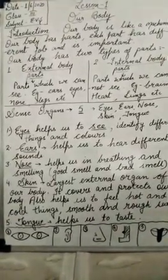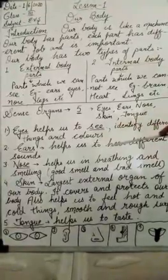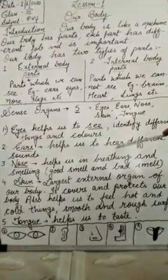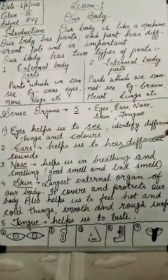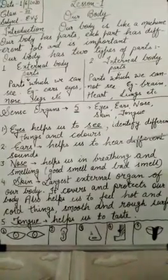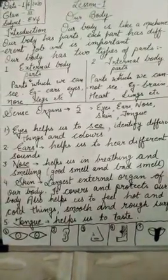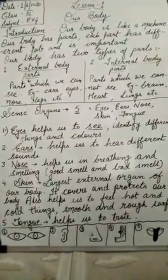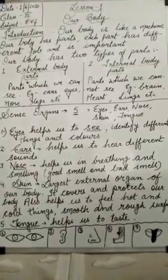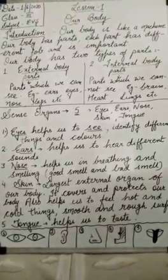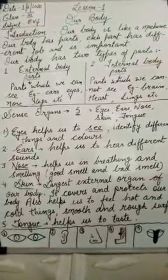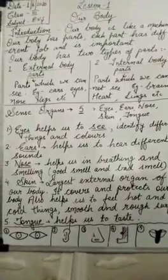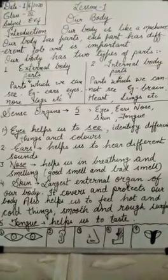The second sense organ is ears. Ears help us to hear different sounds. Main function of the ear is to hear — 'hear' matlab sunna. We can enjoy melodious music with the help of our ears — hum different types of sounds and music enjoy kar sakte hain humare ears se. Jho log deaf hain — 'deaf' matlab jo log bahre hain — ya jinhe sunne mein problem hai, jinke ears properly function nahi kar rahe — woh easily kisi bhi sound ko nahi sun sakte, different sounds ko identify nahi kar sakte.